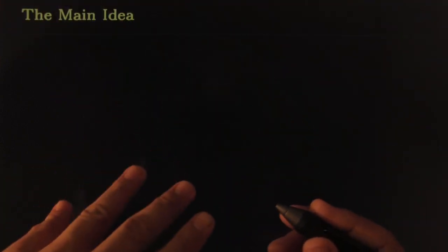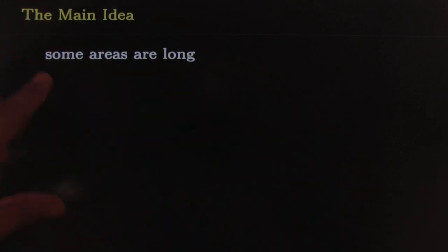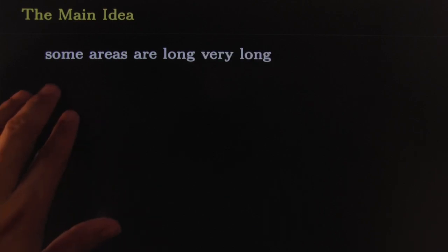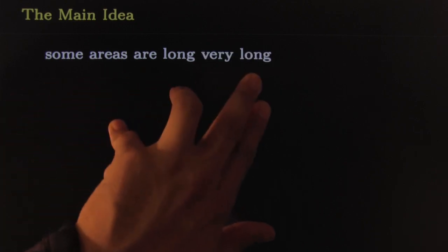All right, so let's get on with it. The main idea goes like this. This is the shortest main idea in the entire history of main ideas because it's only four words long. This is the main idea: some areas are long. Well, maybe six words long. Some areas are long, very very long. That's it, that's the end of the main idea.